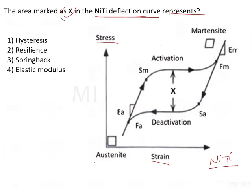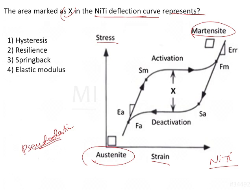If you see this graph carefully, you can see that there is austenite present at one end and martensite present at the other end. We are aware that nitinol has a special property of pseudo-elasticity — it behaves as a pseudo-elastic material. This means that whenever force or stress is applied on the material, it can convert from one allotropic form to another.